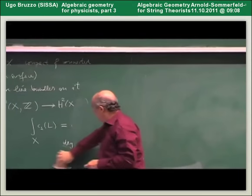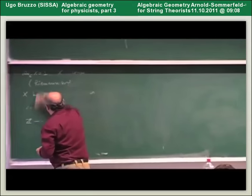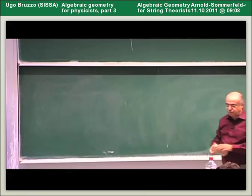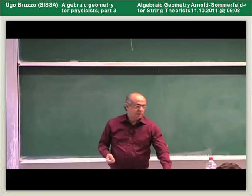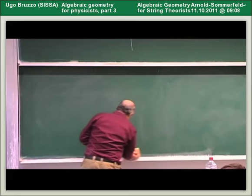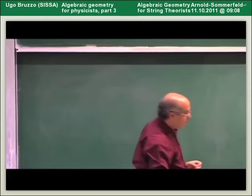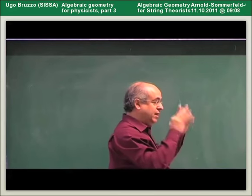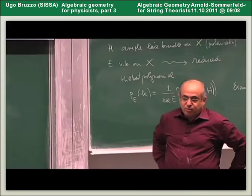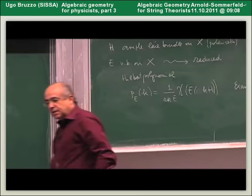What one likes to do is construct a moduli space which parametrizes bundles on the fixed variety in some sense. The problem is that if you consider all bundles, you get a very badly behaved space, because we are interested in isomorphism classes of bundles — we want to identify two vector bundles when they are isomorphic. When building moduli spaces, one must take a quotient to account for isomorphism classes. A problem arises when a vector bundle has automorphisms, because these produce singularities in the moduli space.